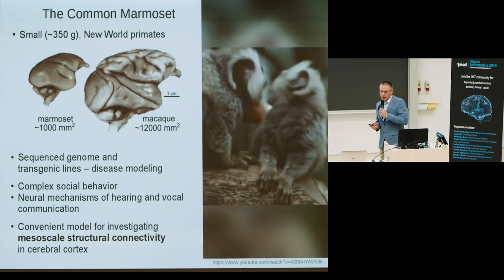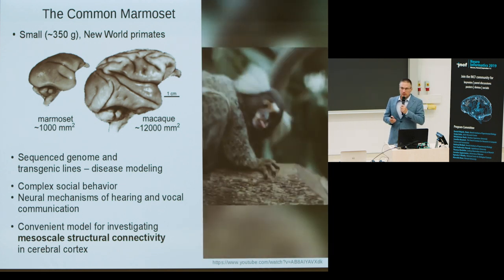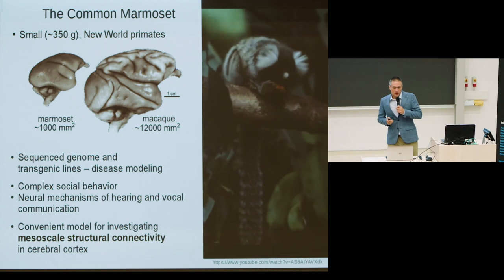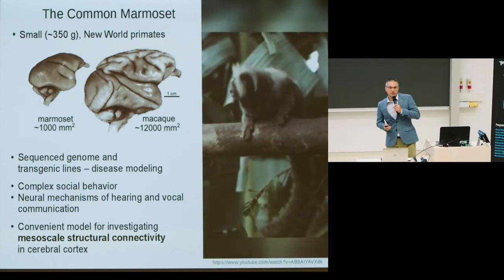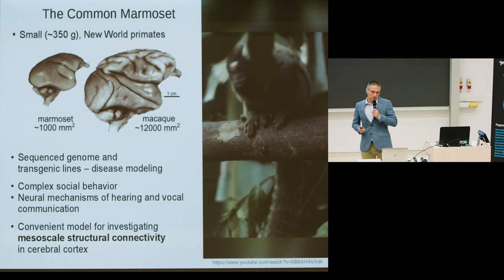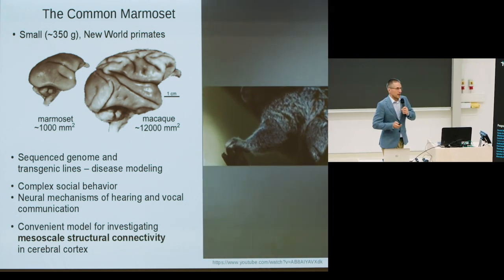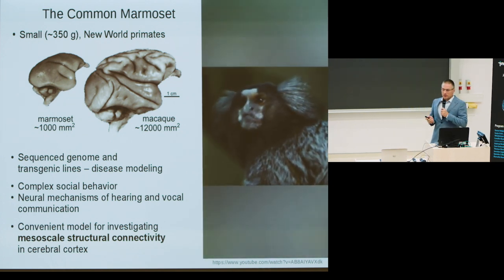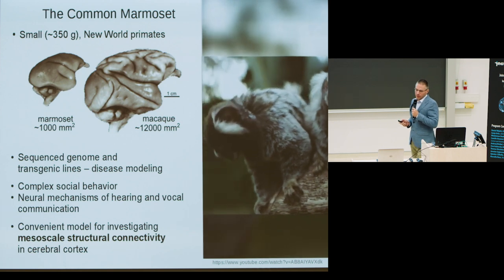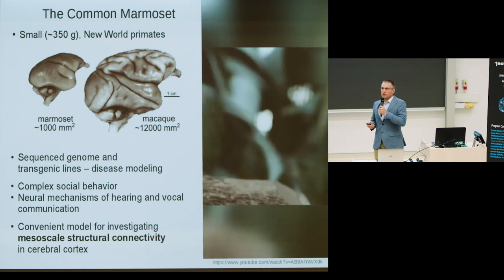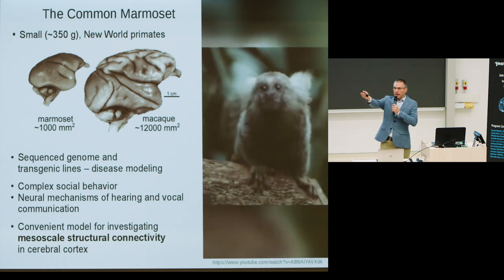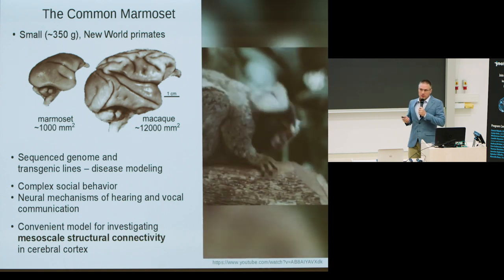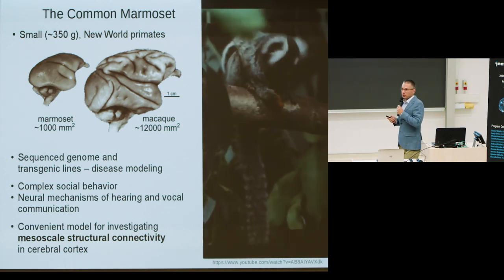They are the first non-human primates for which the genome was sequenced and stable transgenic lines have been obtained. Marmosets are very social animals and exhibit an amazing repertoire of hearing and vocal communication behavior, which is the subject of numerous studies. They are also a convenient model for investigating mesoscale connectivity and constitute a fundamental part of the Japanese program on brain research.